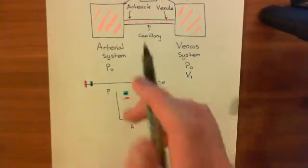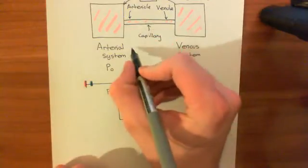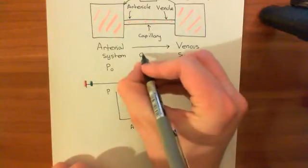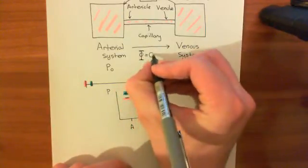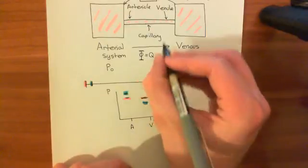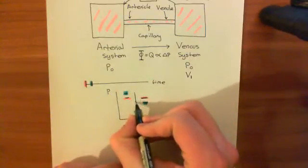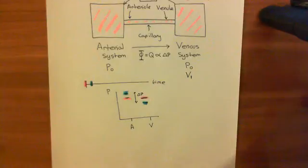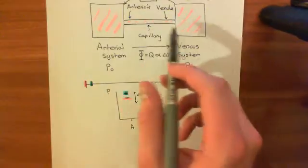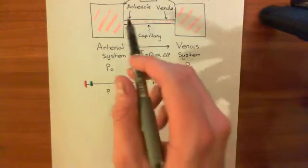If the pressure in the arterial system is greater than the pressure in the venous system, blood is going to move from the arterial system to the venous system — you start to get a flow. The size of this flow (often denoted as Phi or Q) will be proportional to the difference in pressure between the two — delta P — i.e., the arterial pressure minus the venous pressure. A certain amount of blood is going to flow from the arterial system to the venous system in a certain amount of time.